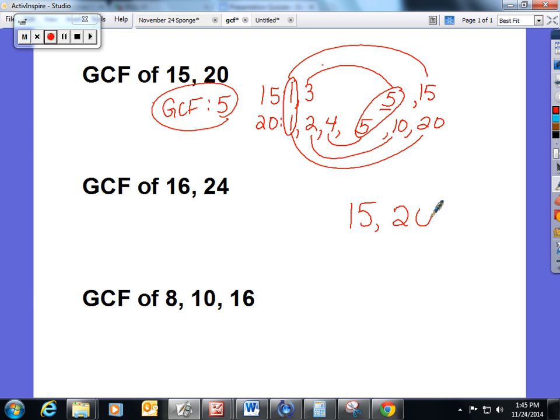You take the numbers 15 and 20 and put them in an upside-down division bar. Look to see what the highest number is that goes into both 15 and 20 - that's 5. Five fits into 15 three times and 5 fits into 20 four times.